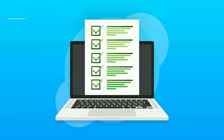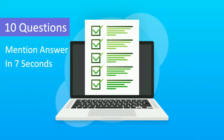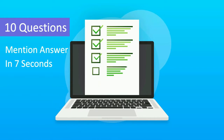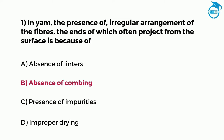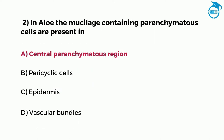This test consists of 10 questions and you will get 7 seconds to write your answer in the comments. For example, if the answer to question 1 is option B, you can write in the comments 1B. Similarly, if the answer to question 2 is option A, you can write in the comments 2A.